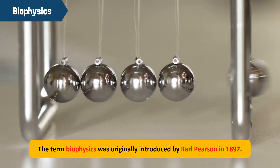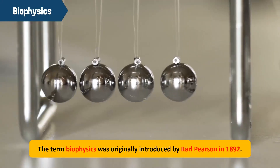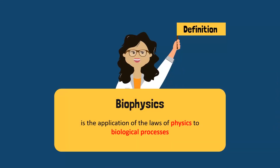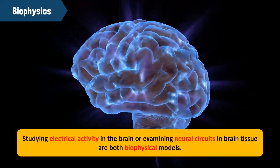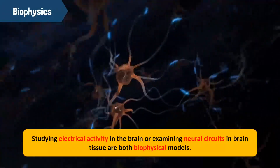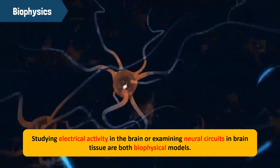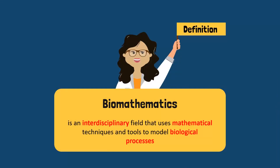The term biophysics was originally introduced by Karl Pearson in 1892. Biophysics is the application of the laws of physics to biological processes. For example, studying electrical activity in the brain or examining neural circuits in brain tissue are both examples of biophysical models. Also known as mathematical biology, biomathematics is an interdisciplinary field that uses mathematical techniques and tools to model biological processes.